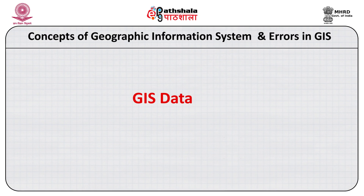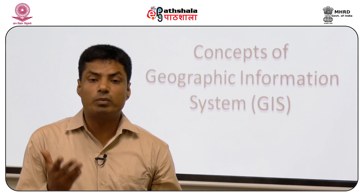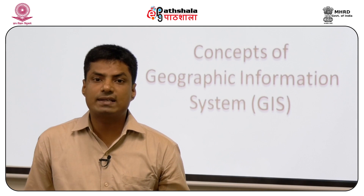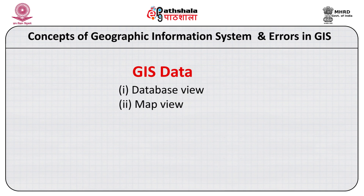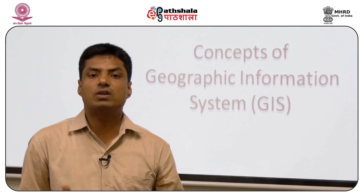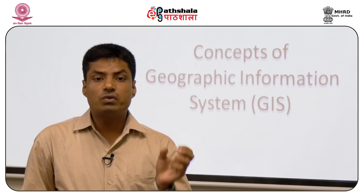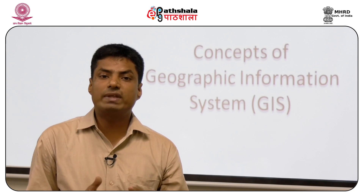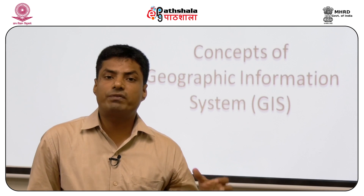GIS data can be viewed in three different ways. Number one is database view, where we identify data in tabular form — tabular data can be stored in GIS and correlated with spatial data. Number two, it can be viewed in map form. The map is the ultimate result of GIS analysis. Through the map we can visualize information and also compare information from different time periods.